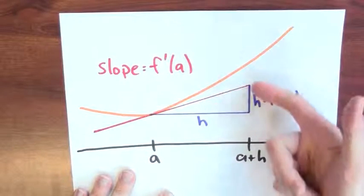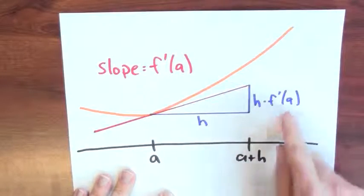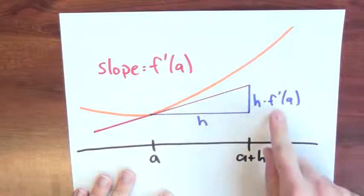In order to guarantee the slope is f prime of a, rise over run had better be equal to f prime of a. This divided by this is f prime of a.